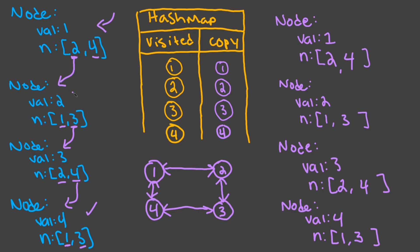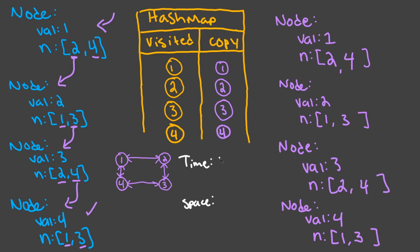The algorithm we just discovered is depth-first search. We visit every node all the way down to the last node, then pop back up to finish the graph. Our time complexity is O(N + M), where N is the number of nodes and M is the number of edges. Our space complexity is O(N) because we have to store all of the new nodes.